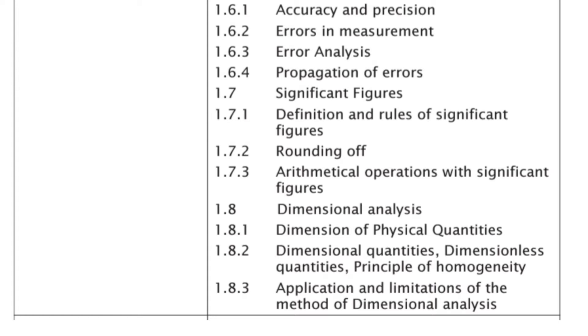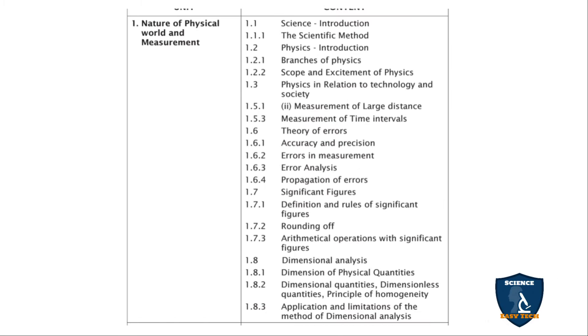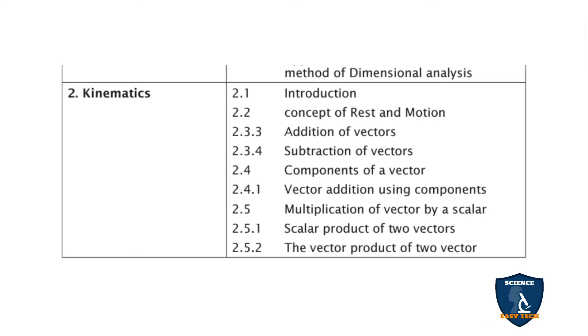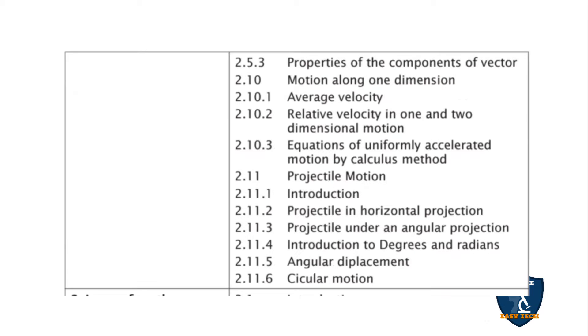Chapter 2: Kinematics. 2.1 Introduction, 2.2 Concepts of Rest and Motion, 2.3.3 Addition of Vectors, 2.3.4 Subtraction of Vectors, 2.4 Components of a Vector, 2.4.1 Vector Addition Using Components, 2.5 Multiplication of Vectors, 2.5.1 Scalar Product of Two Vectors, 2.5.2 Vector Product of Two Vectors, 2.5.3 Properties of Components of Vectors, 2.10 Motion Along One Dimension, 2.10.1 Average Velocity, 2.10.2 Relative Velocity in 1D and 2D Motion.